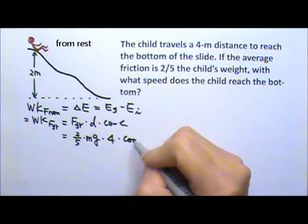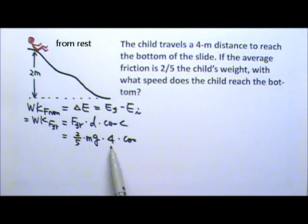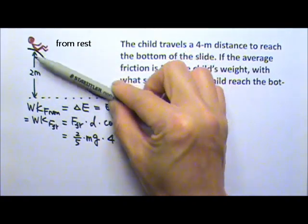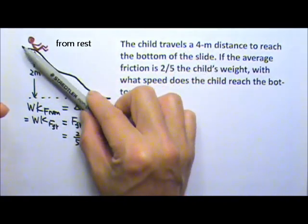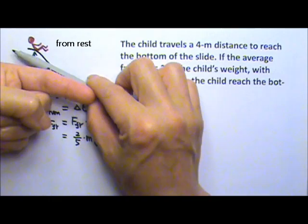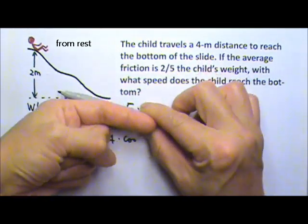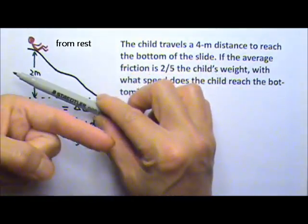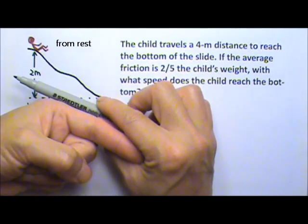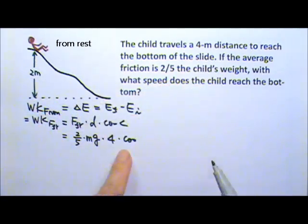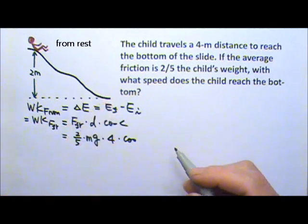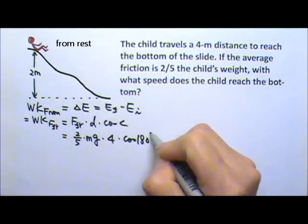What do you think is the angle between the friction and the displacement? At any moment, friction will go up the slide when the displacement goes down the slide. So even though the direction changes, the friction and the displacement are always in opposite directions. So this angle at any moment when the child slides down is 180.